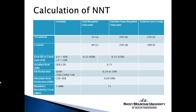The absolute risk reduction gives us an idea of the absolute level of risk being reduced by the treatment. We take the CER and subtract the EER: 0.31 minus 0.22 gives us an absolute risk reduction of 0.09, or 9%. This can also be expressed as a percentage.